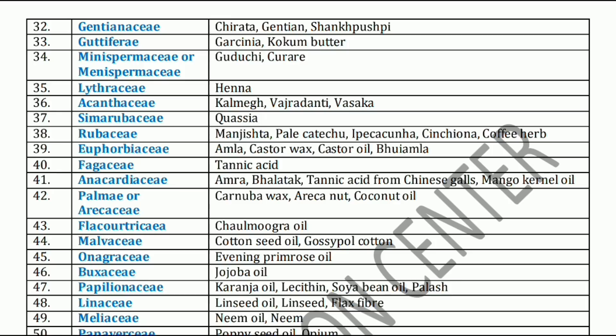Next, Guttiferae family. Guttiferae family has Garcinia and Gamboge. Next family is Menispermaceae family. Menispermaceae family has Guduchi and Curare. Next family is Lythraceae family. Lythraceae family has Henna, used as a coloring agent. Next, Acanthaceae family. Acanthaceae family has Kalmegha, Vajradanti, and Vasaka.